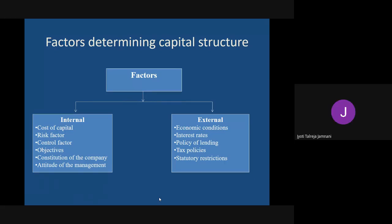The fourth internal factor is the objective of the firm. If the firm was started with the objective of making maximum profit, that firm will be ready to take risk and go for debt. But if the objective is wealth maximization - thinking about the shareholders - then the owner will take less risk because they are answerable to shareholders and must invest their money wisely.